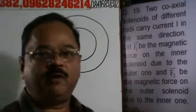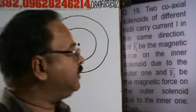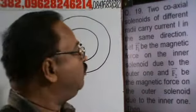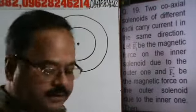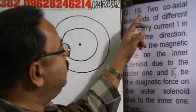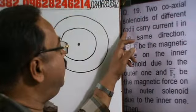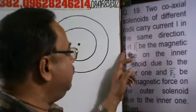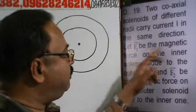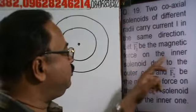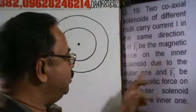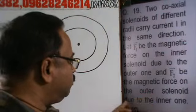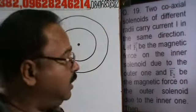The next problem is from magnetic effect of electric current, and the topic is force on a current-carrying conductor. The problem is: two coaxial solenoids of different radii carry current in the same direction. Let vector F1 be the magnetic force on the inner solenoid due to the outer one, and vector F2 be the magnetic force on the outer solenoid due to the inner one.